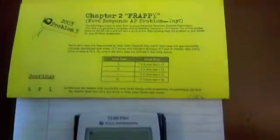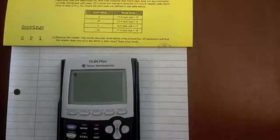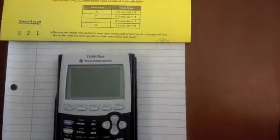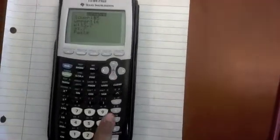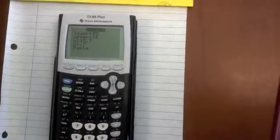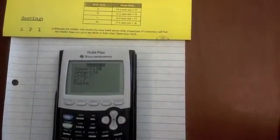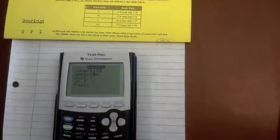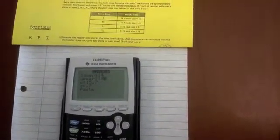So to solve this problem, you're going to use normal CDF on the calculator. To get to normal CDF, you hit 2nd, vars, 2, and your lower value is going to be 14, because that is the smallest neck size that they carry. And your upper limit is going to be 18, since that's the highest neck size that they carry.